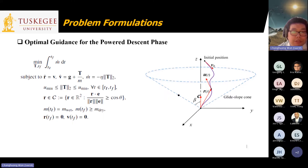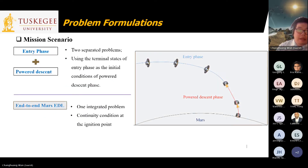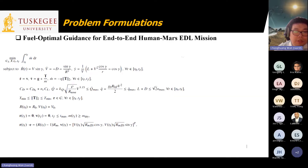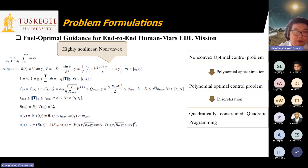We can formulate the optimal guidance for the powered descent phase: the objective is to minimize fuel consumption, subject to dynamic equations, mission constraints, and boundary conditions. This is a separate formulation, but we integrate it into an end-to-end form as one combined problem by enforcing continuity conditions at the junction point between the entry and powered descent phases, resulting in a highly nonlinear and non-convex problem.